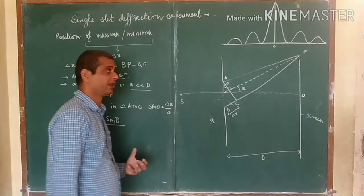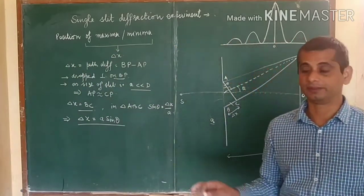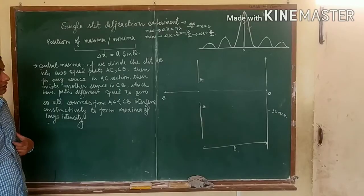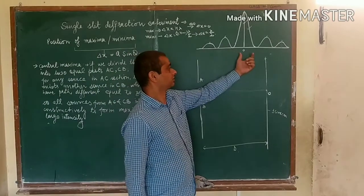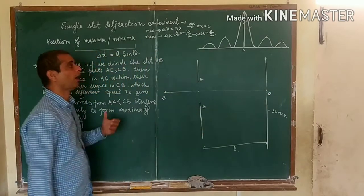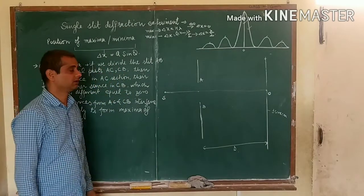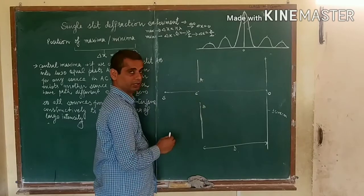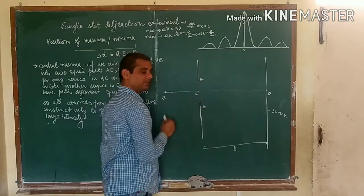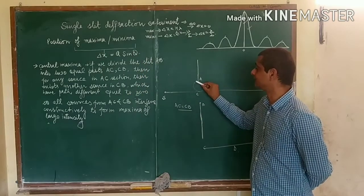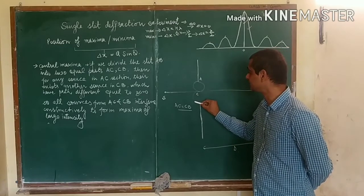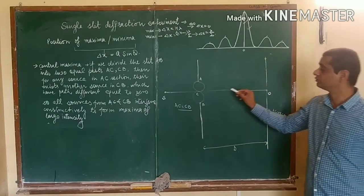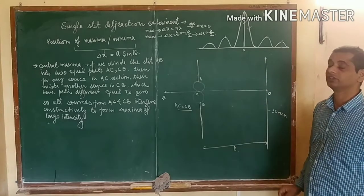Now I want to explain the central maxima and the secondary maxima separately, not following the same rule as in Young's double slit experiment. For central maxima: why is there a maxima at the center, and why is its intensity greater than the other maximas? To explain it, I divide the slit AB into two equal parts, such that AC equals CB. For any source in the AC section, there exists another source in the CB section which will have a path difference equal to zero.